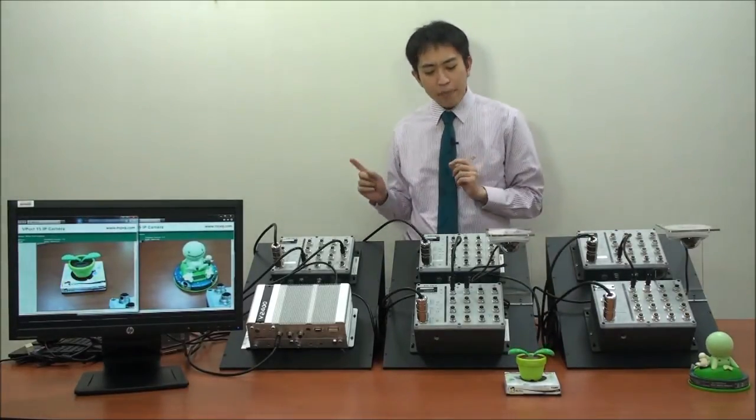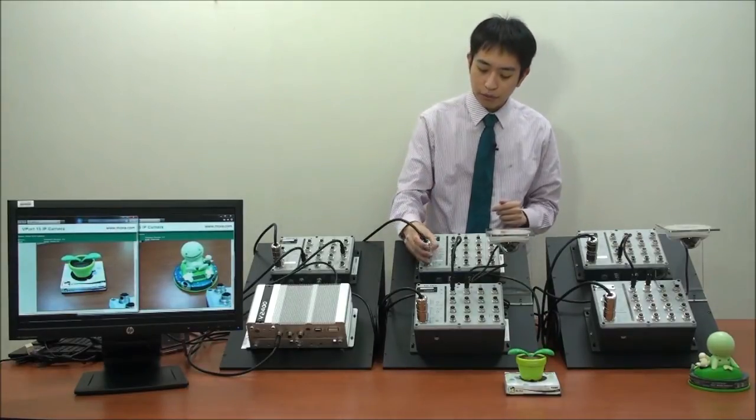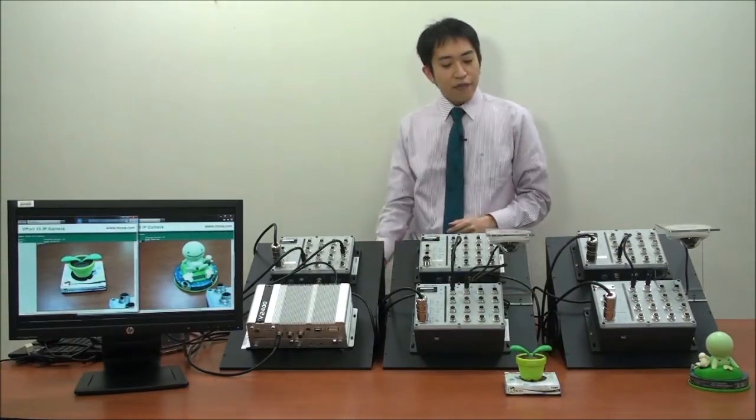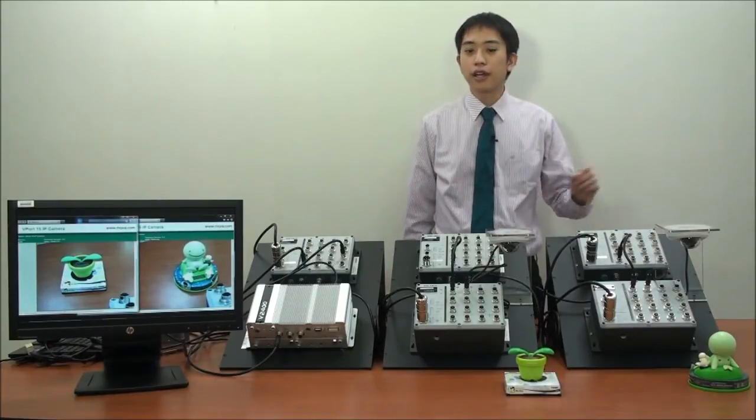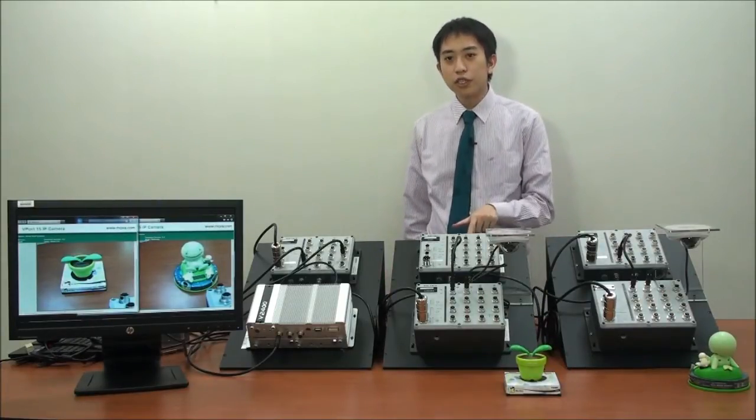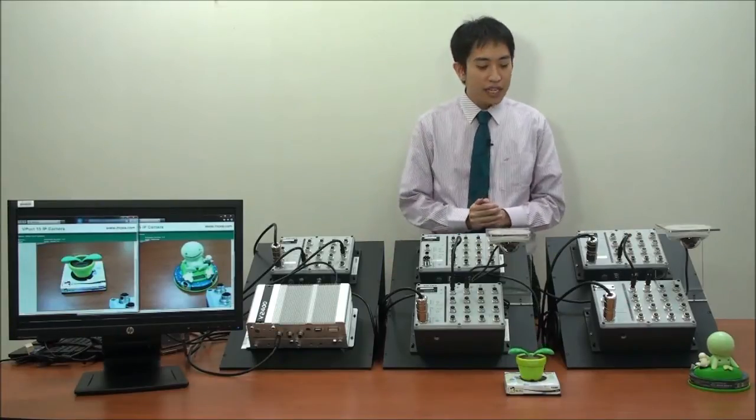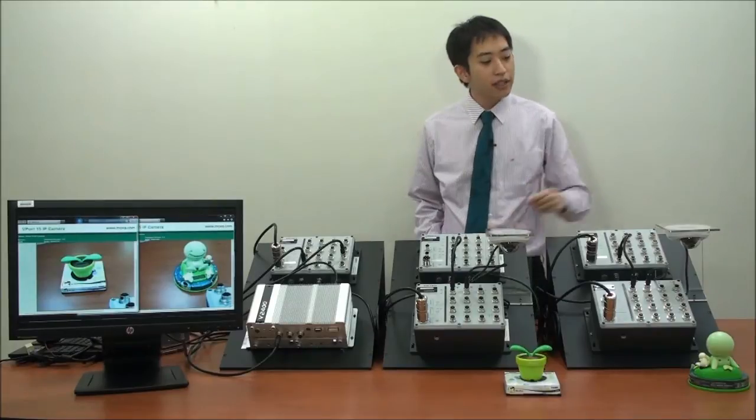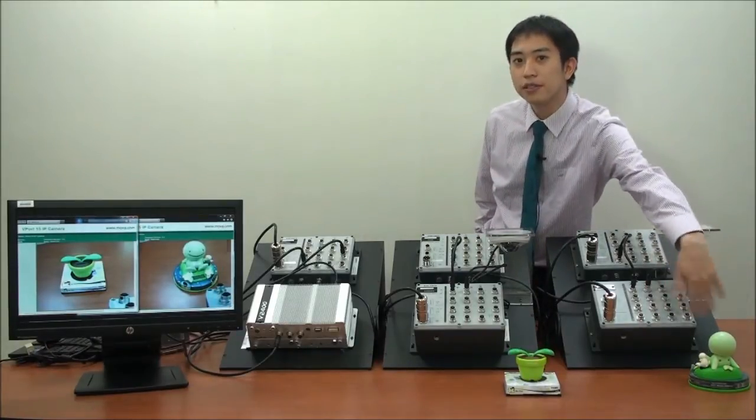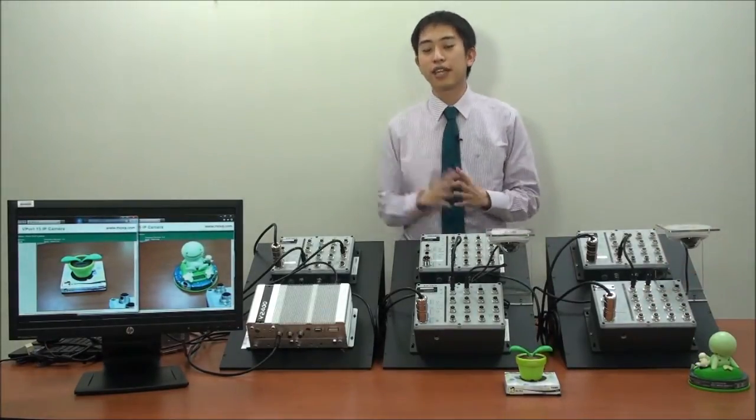Now what would happen if I were to disconnect power from train car two? If I did not have relay bypass technology, train car three would also get cut off. But because this switch does have relay bypass, it will continue to pass through data from train car three, and the live video feed from train car three will still appear in the driver's cabin.